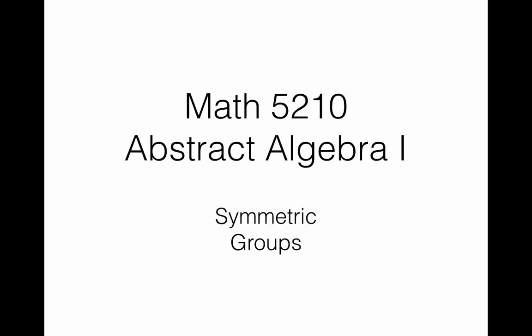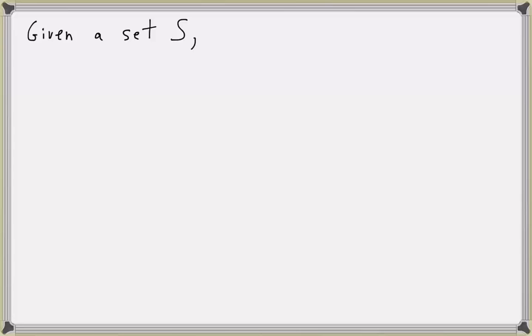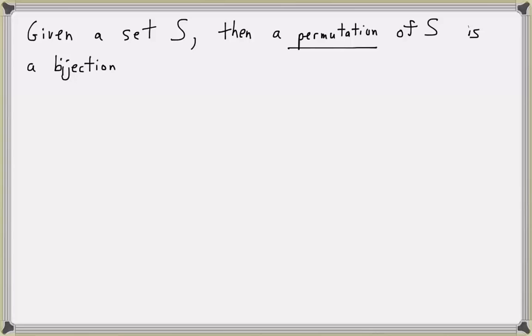In this lesson, we will introduce a very important set of groups called the symmetric groups, whose elements consist of one-to-one and onto functions. First, let's define a permutation. Given a set S, a permutation of S is a bijection — that is, a one-to-one, onto function from S to itself.